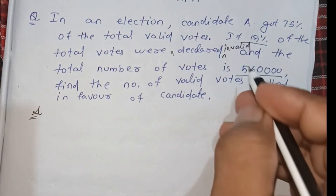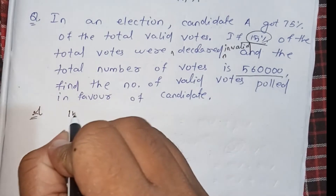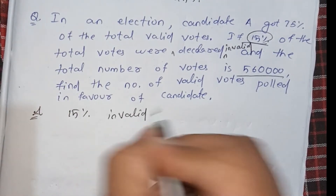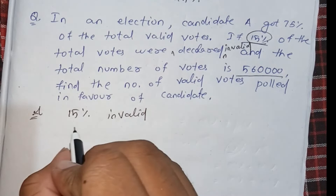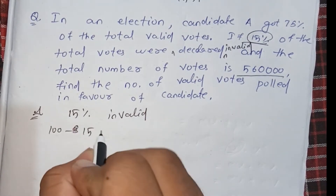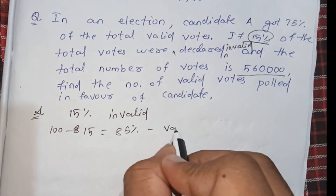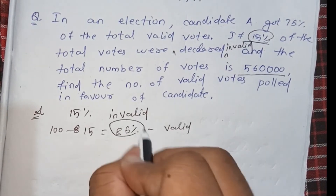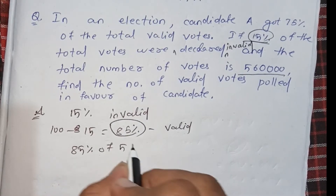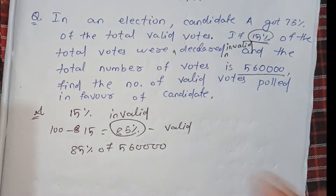If 15% of the votes are invalid, then the percentage of valid votes is 100 minus 15, which equals 85%. So, 85% of those 5,60,000 votes are valid.